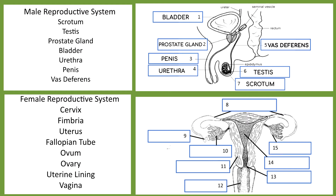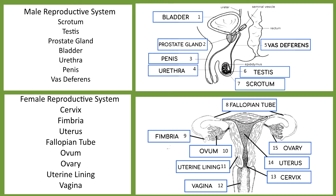For the female reproductive system, from the topmost we have: the fallopian tube, the fimbria or the hand-like structure, the ovum, the uterine lining, the vagina, the ovary, the uterus, and the cervix.